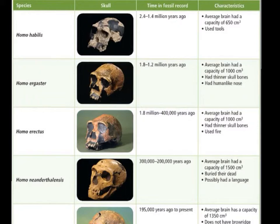Comparing Australopithecus to Homo habilis, Homo habilis has a brain capacity that's about 20% larger. So they're definitely a lot more intelligent than the group that came before them, those australopithecine individuals. Australopithecus is a genus, just like Homo is a genus, so there are many different groups within Australopithecus.